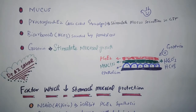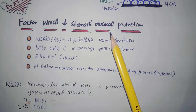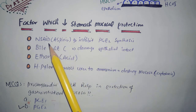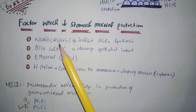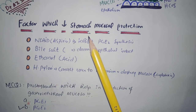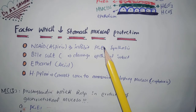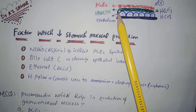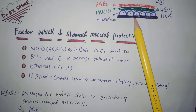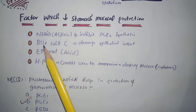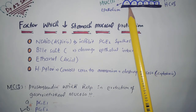Factors that decrease stomach mucosal protection: the first is NSAIDs, like aspirin, because they inhibit the cyclooxygenase (COX) enzyme, thereby inhibiting the synthesis of prostaglandin E2. Since prostaglandin E2 protects the gastric mucosa, if there is no prostaglandin E2, protection is decreased. The second factor is bile salt, which can damage the junctions between epithelial cells.